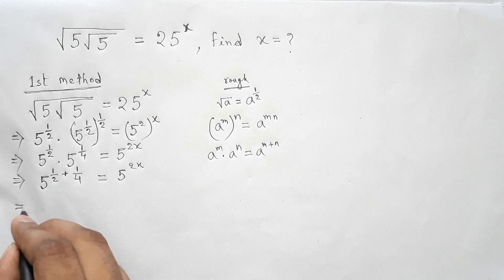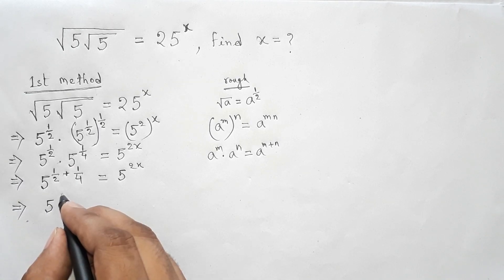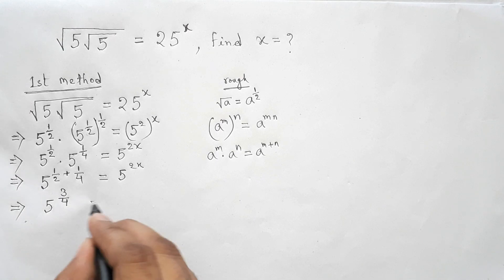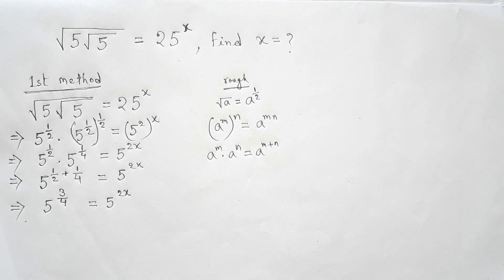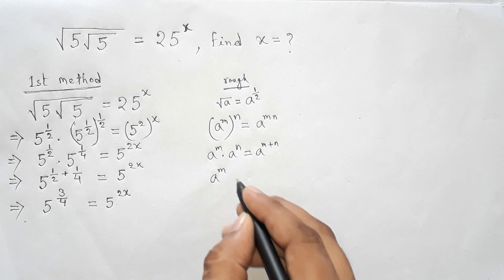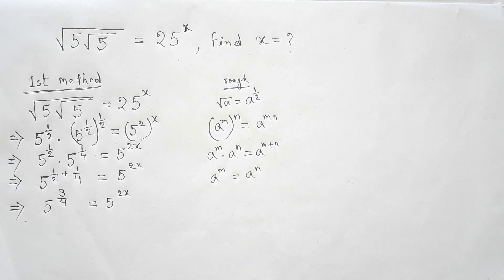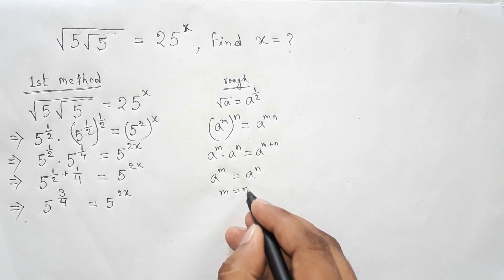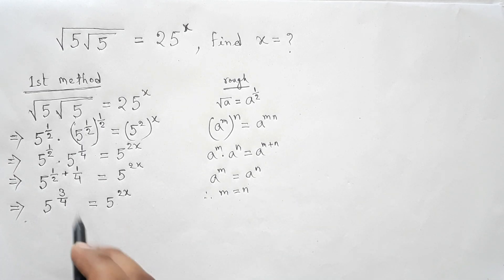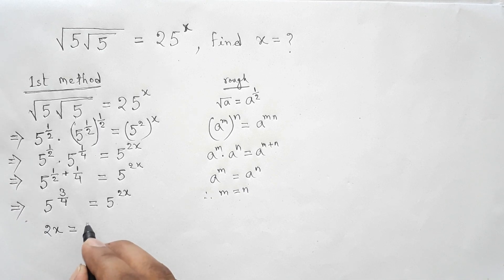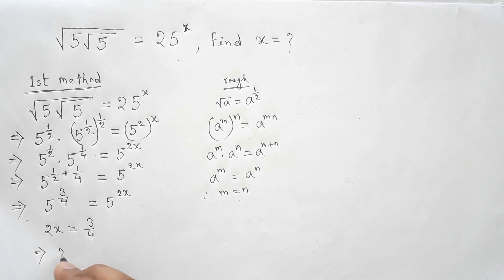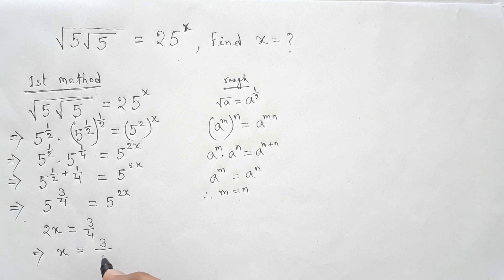Calculating: 5 to the power 3 by 4 equals 5 to the power 2x. Using the indices rule that if both bases are equal then their powers are equal — a to the power m equals a to the power n implies m equals n — we get 2x equals 3 by 4, so x equals 3 by 8.